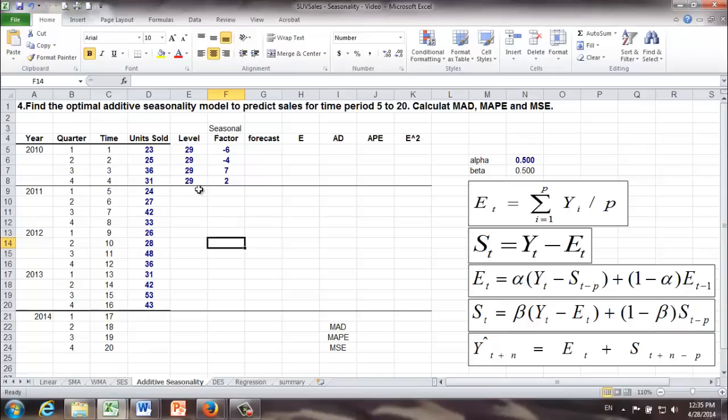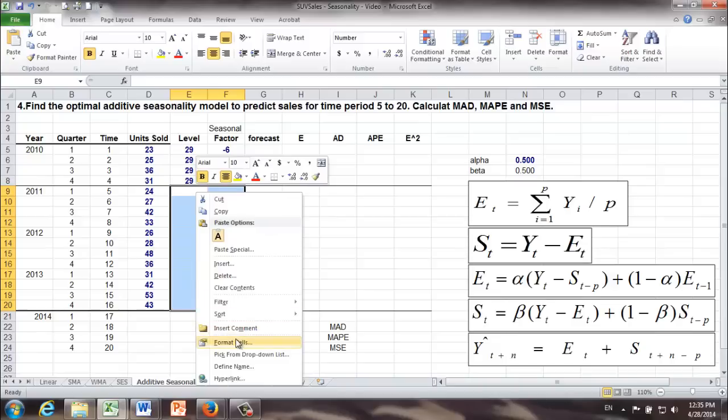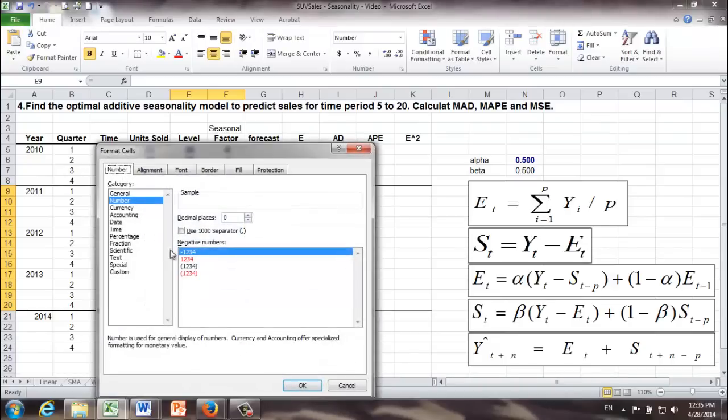Once again, to make sure our forecast will be integer, we are going to format cells. Make sure they keep zero decimal place.